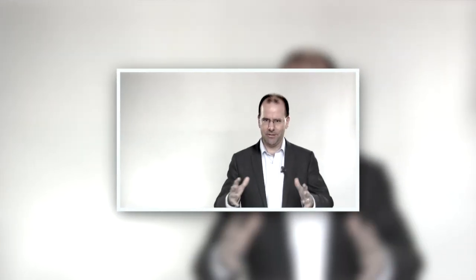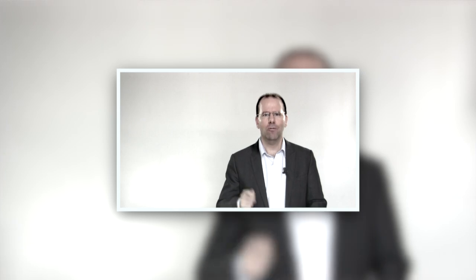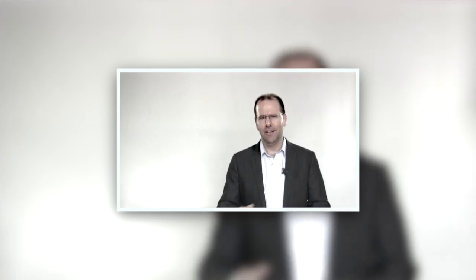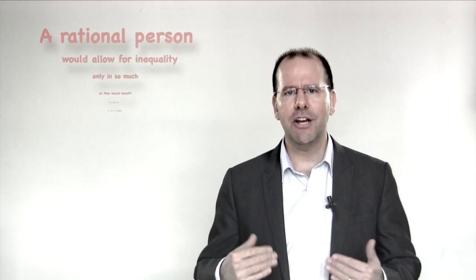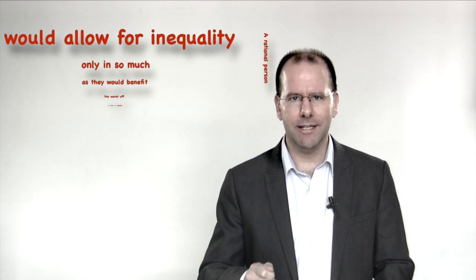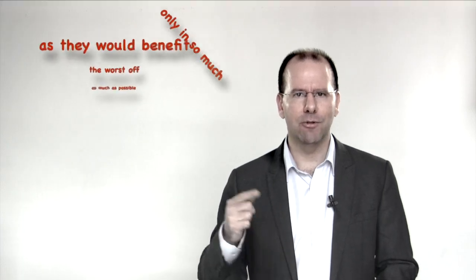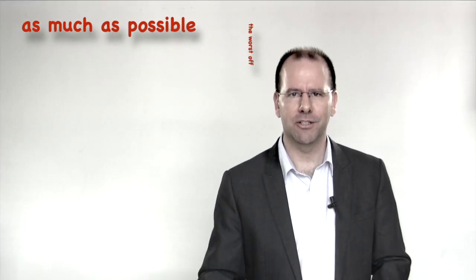So, Rawls was grappling with the problem of the extent to which, and the circumstances within which, inequalities are justifiable in society. Notice the connection between the word justifiable and justice. Using the thought experiment that we talked about above—the veil of ignorance—and of course a set of rational arguments that we can't get into in this video, but you can read about it if you go to his paper, Rawls shows that a rational person would allow for inequalities only insofar as they would benefit the worst off as much as possible.